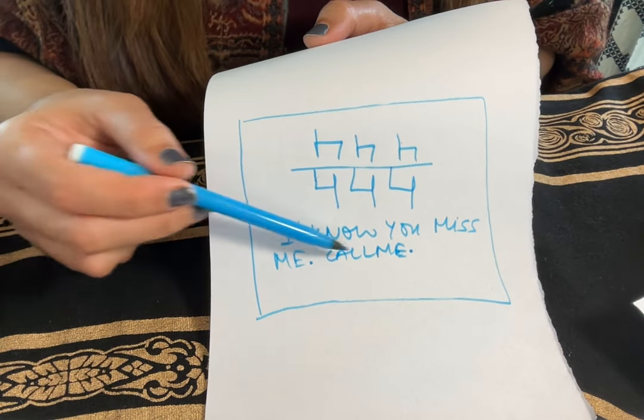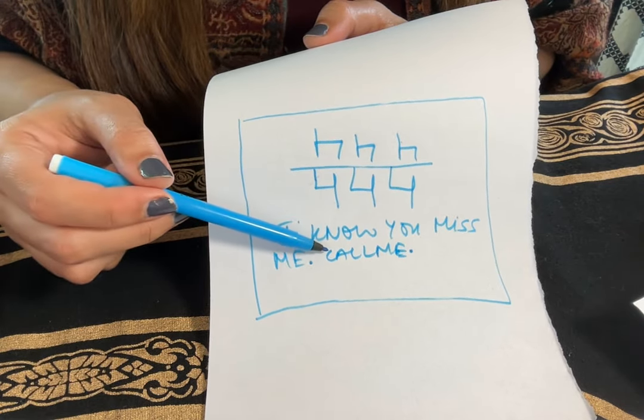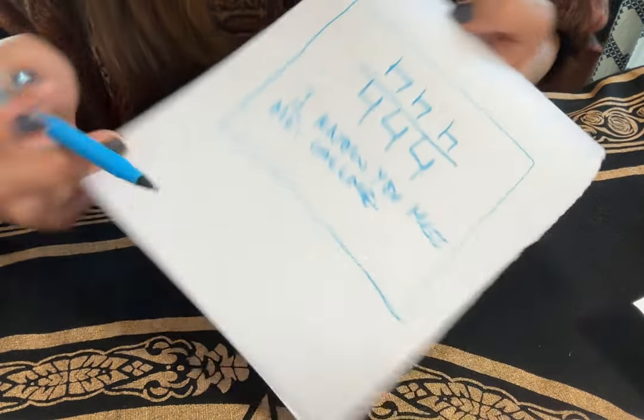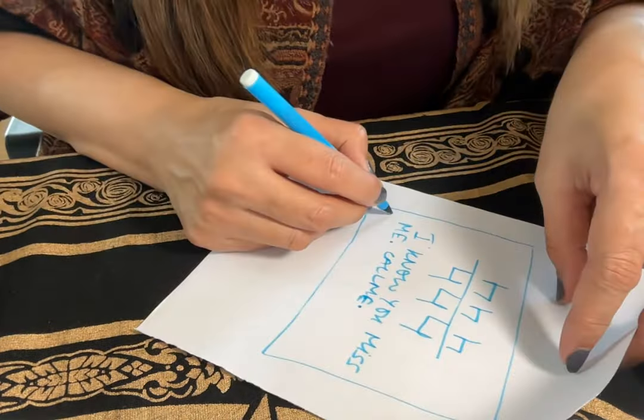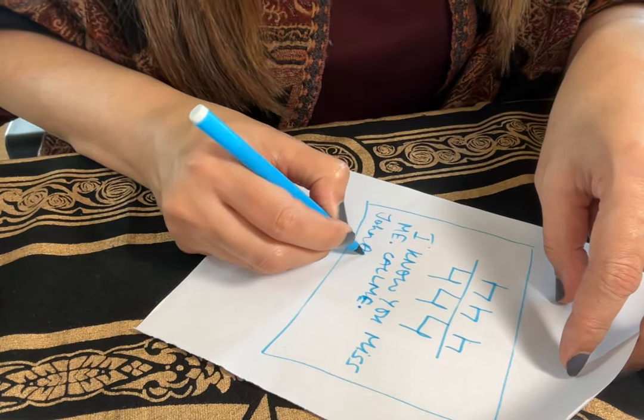Here you will write John Doe, or the person you are seeing. Underline it three times. This is their name, the person you love.